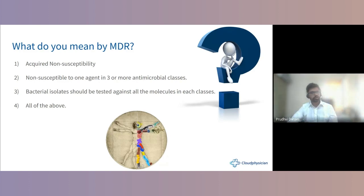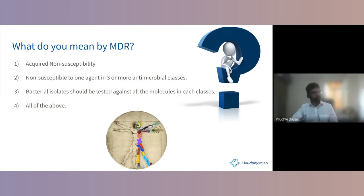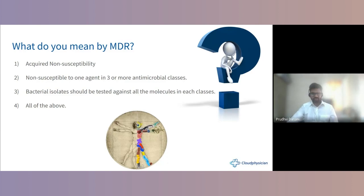When we say MDR, it means acquired non-susceptibility to at least one agent in three or more antibiotic classes. The bacterial isolate should be tested against all molecules in each class. The answer to the MCQ is: all of the above.